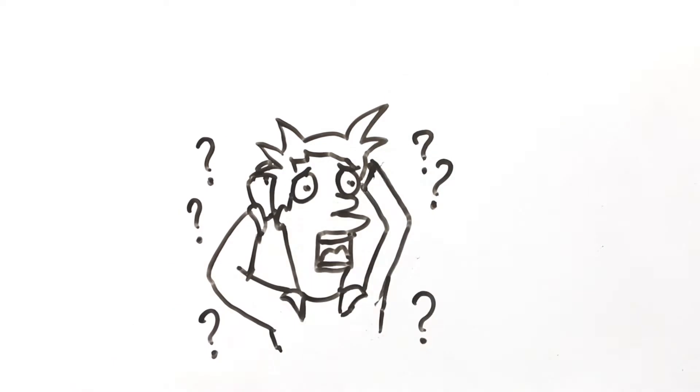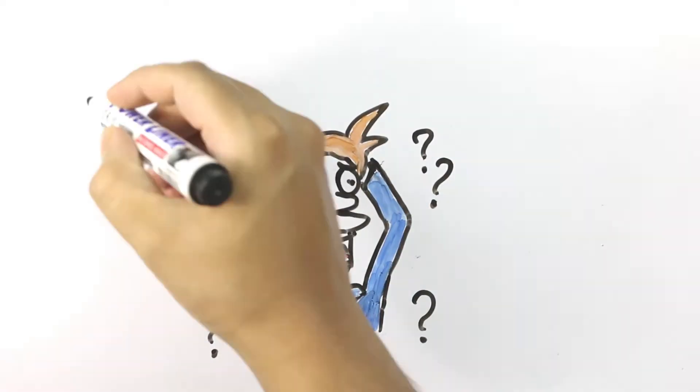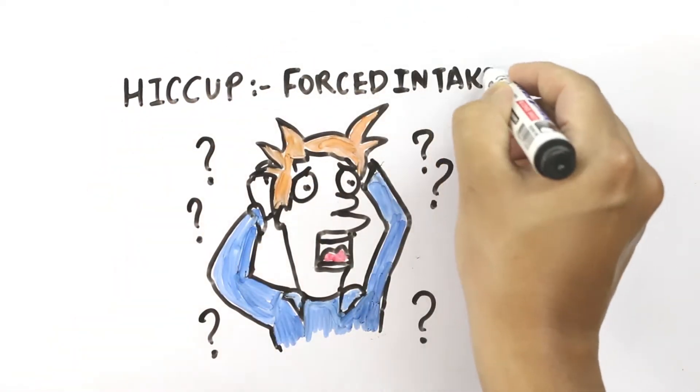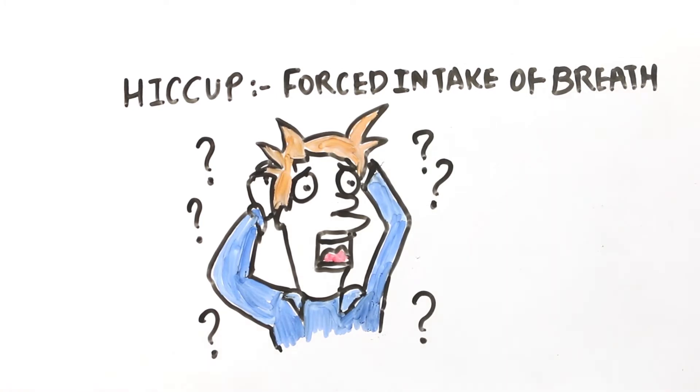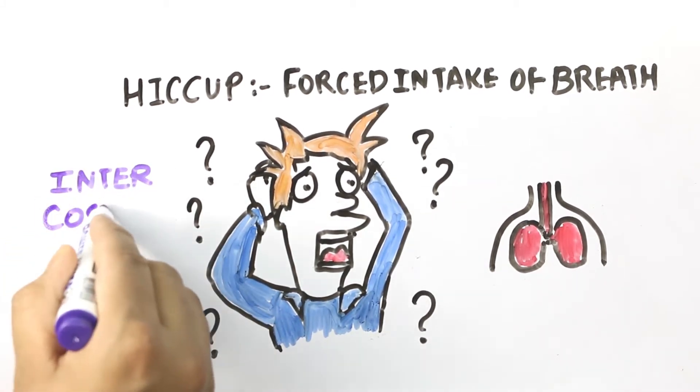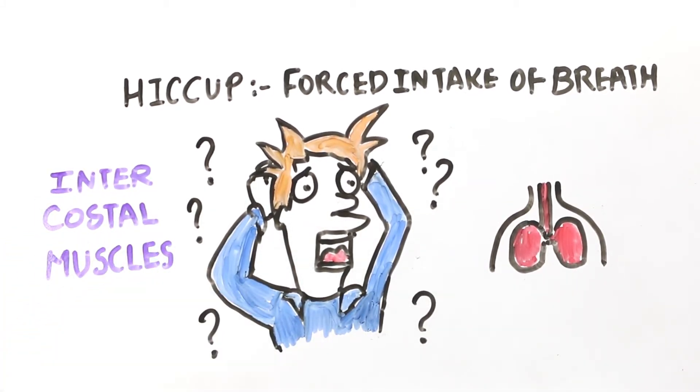So why do we have hiccups anyway? Well, there's a scientific reason behind that. A hiccup is a kind of forced intake of breath caused by muscle spasms in your chest and throat. The muscles we use when we take in a breath are the intercostal muscles situated between the ribs and the diaphragm, a sheet of muscle below the lungs.